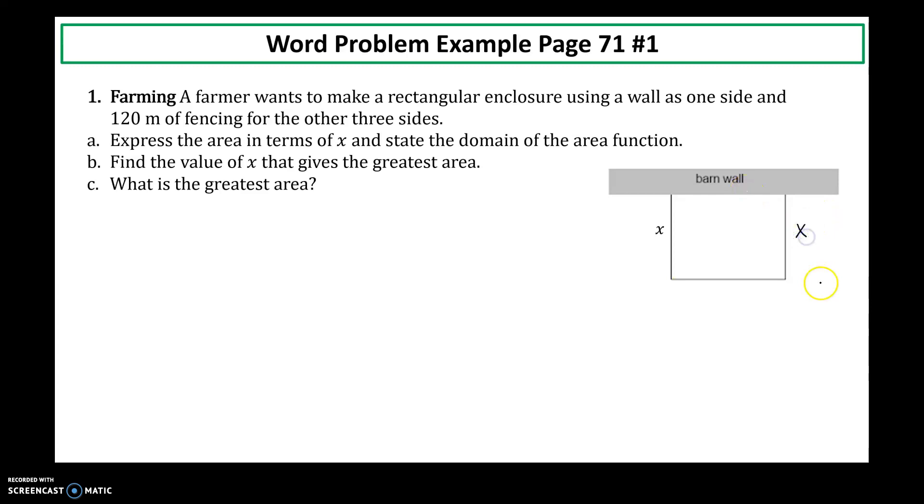So if this is rectangular, this is x. Opposite sides are congruent. And we'll name that length y. So first thing we have to do, express the area in terms of x and state the domain of the area function.